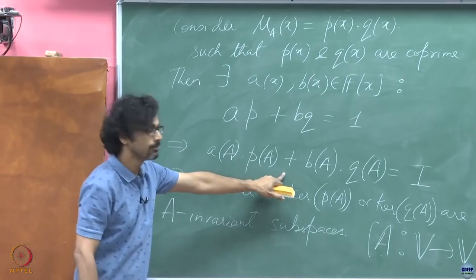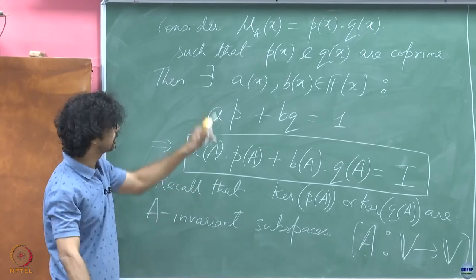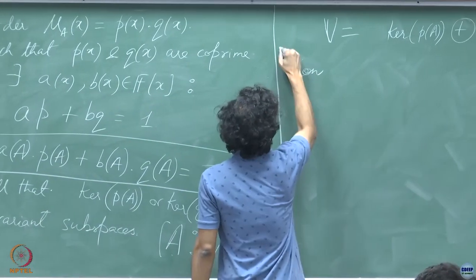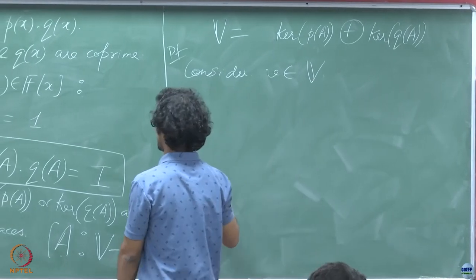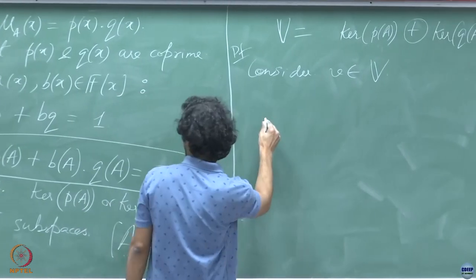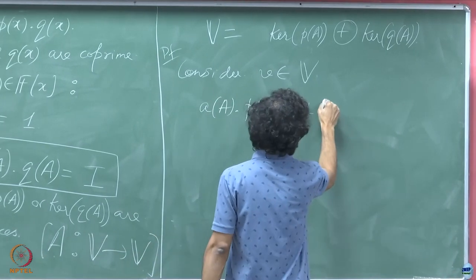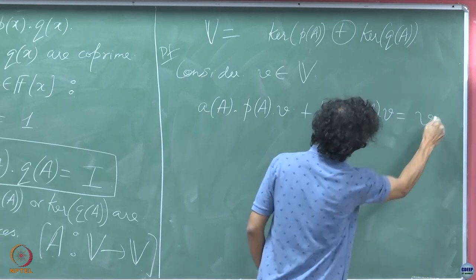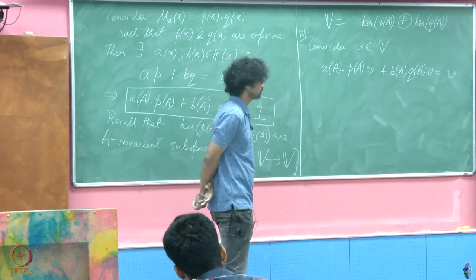The key is this expression here. We have split up the monic minimal polynomial into co-prime factors, so this will definitely be true. Consider any v belonging to this space. If I act on v using this operator, I have a(A)·p(A) acting on v, plus b(A)·q(A) acting on v, which equals v itself.